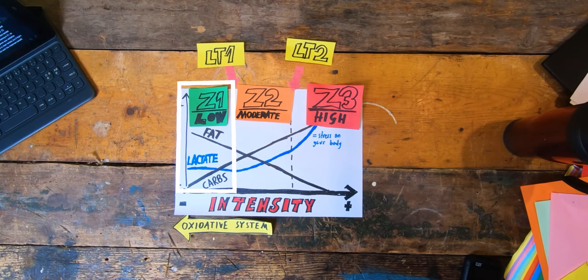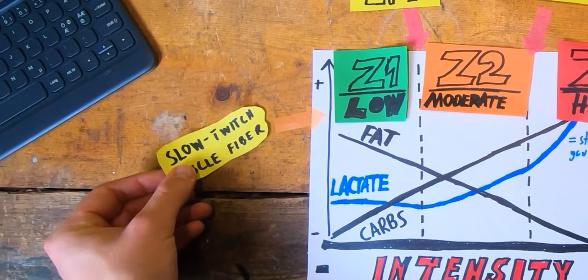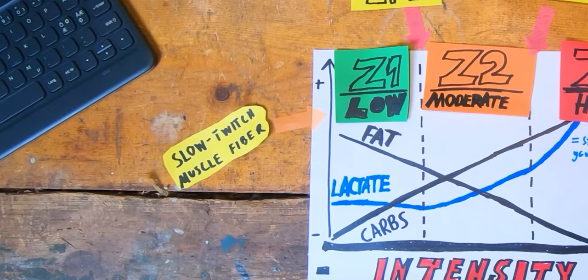Training in zone one is the best zone for developing your oxidative system — in other words, increasing your body's ability to use fats as an energy source. Being able to burn fat efficiently is really important for long sustained endurance efforts because, unlike carbs, we have a lot of fat stored in our body.